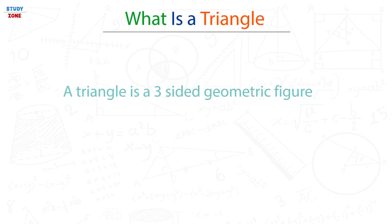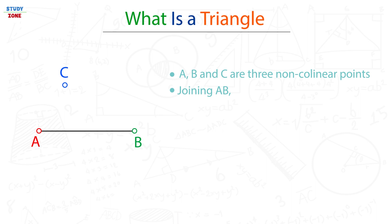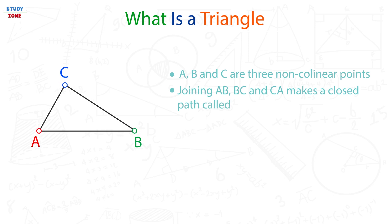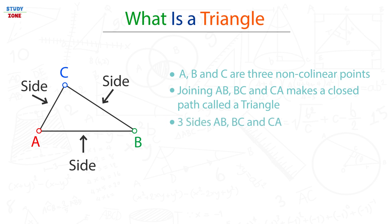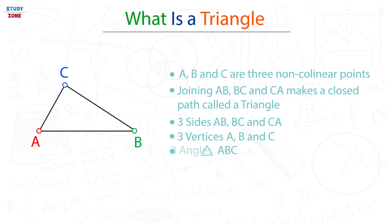A triangle is a three-sided geometric figure that we get by joining three non-collinear points. Here we have three non-collinear points A, B, and C. Joining AB, BC, and CA makes a closed path called a triangle. So AB, BC, and CA are the three sides of triangle ABC, and A, B, and C are the three vertices of triangle ABC.